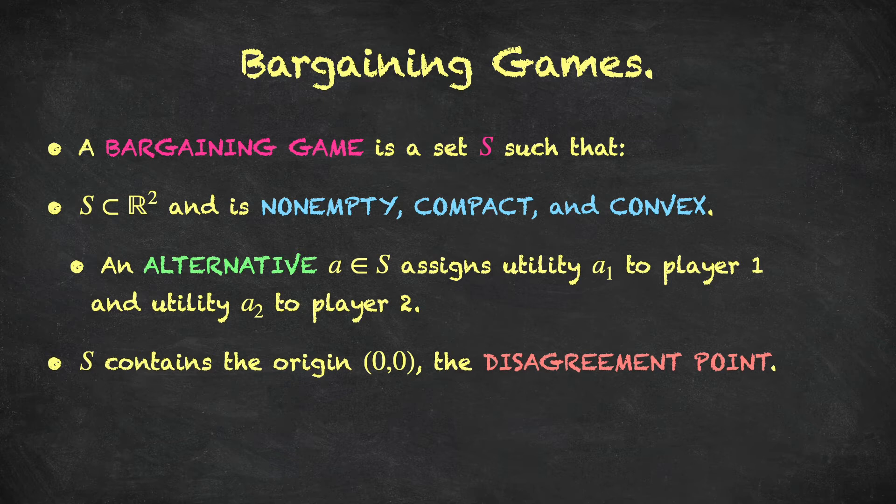We'll make several technical assumptions, in particular that a bargaining game is non-empty. So, it has some alternatives contained within the set. It is compact. Now, compactness is a deep mathematical property, but essentially what it will mean for us is that the set includes its own boundary. And you could, for instance, contain the set S within a large enough square. We'll also assume that the set S is a convex set. So, if we remember the definition of a convex set, all it means is that if we take any two points within S, connect them with a line, then every single point along that line is also contained in the set S.